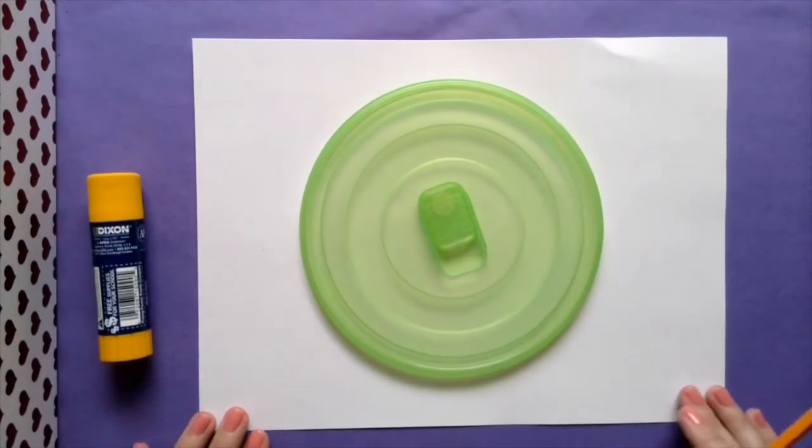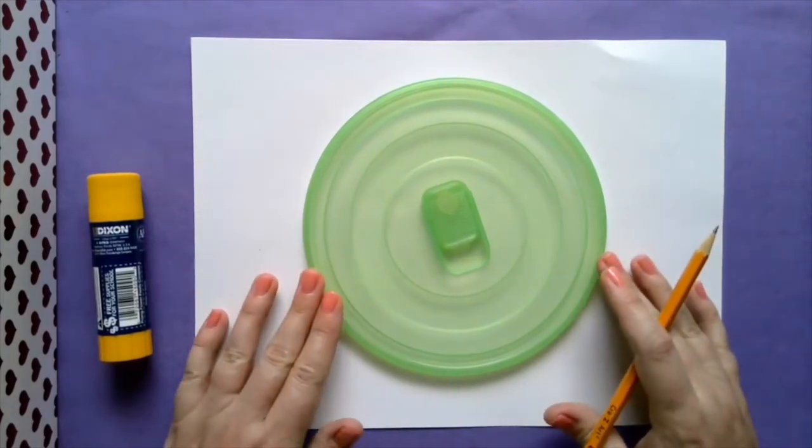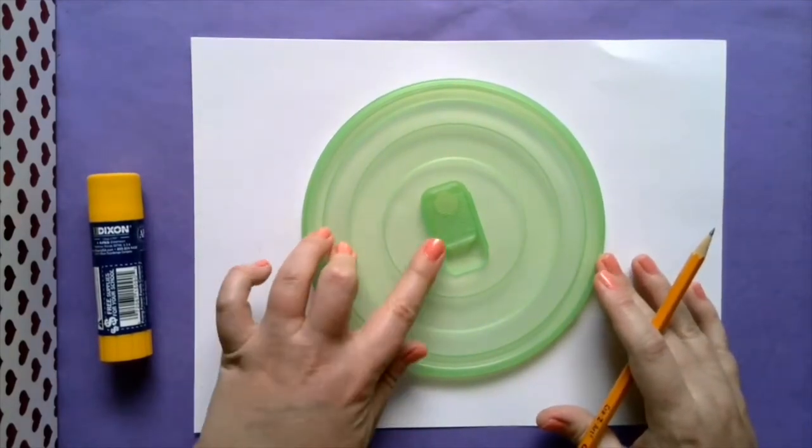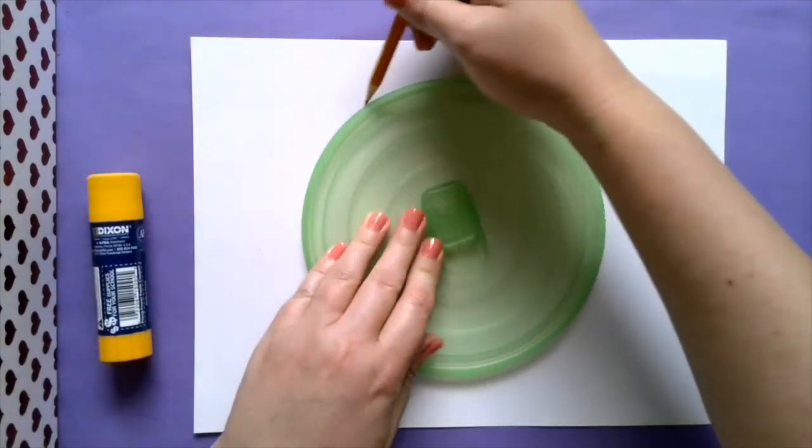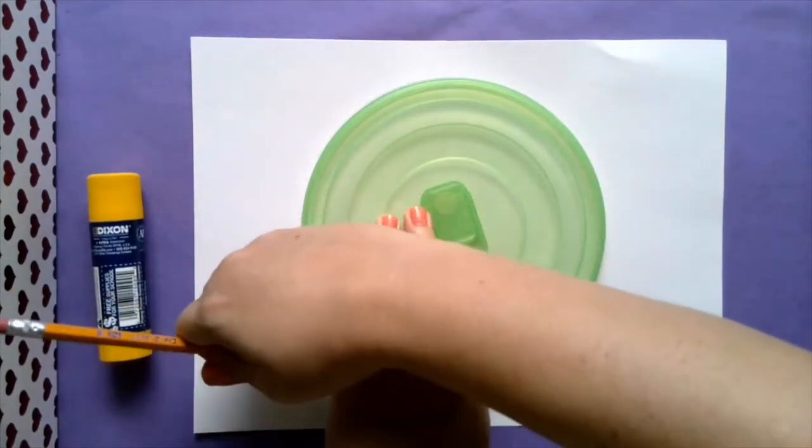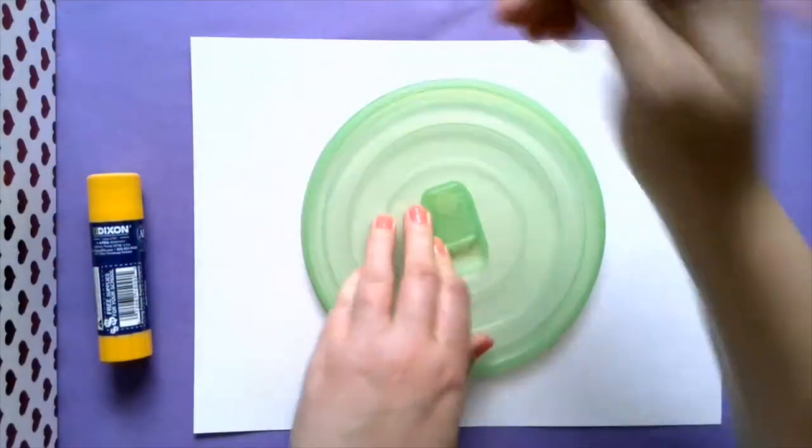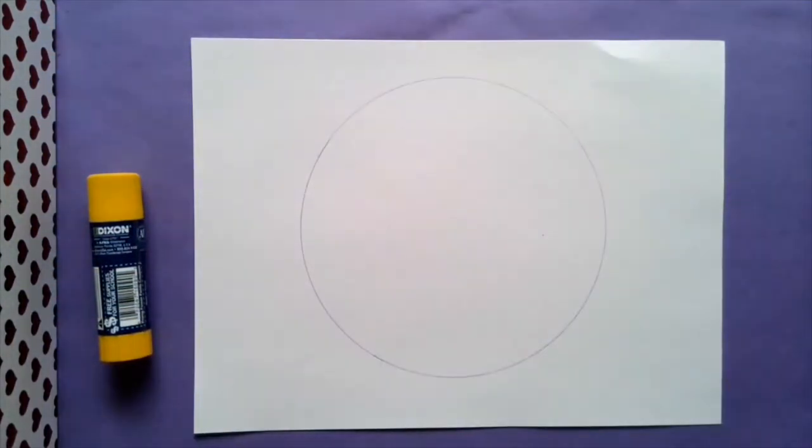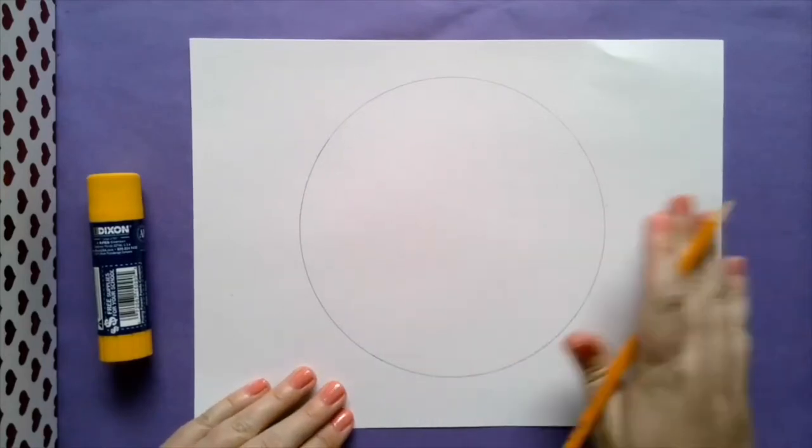We need to first trace something circular to make the outline for our Earth. I just have this lid off of a bowl from the kitchen, and I'm going to center it as close as possible to the middle of my paper. With a pencil, I'm going to lightly draw the circle around.